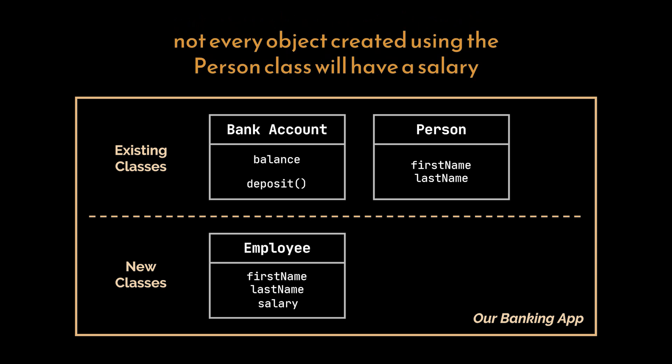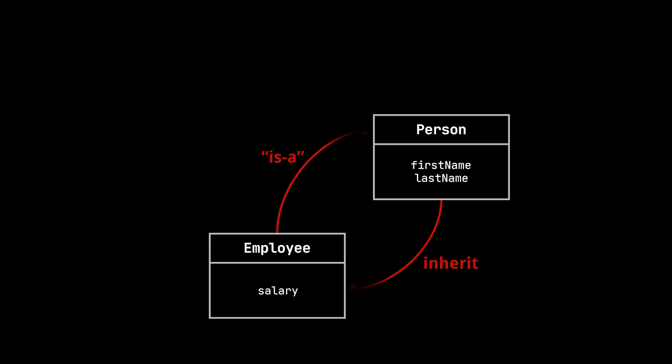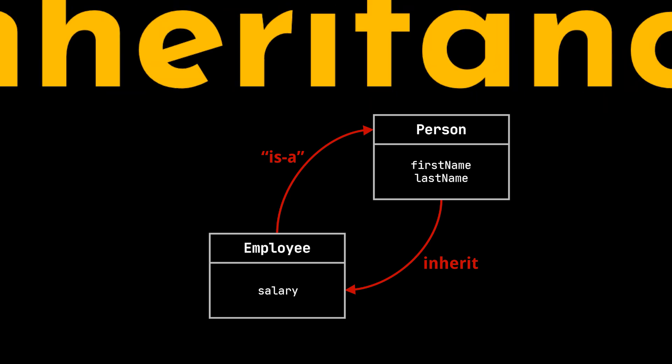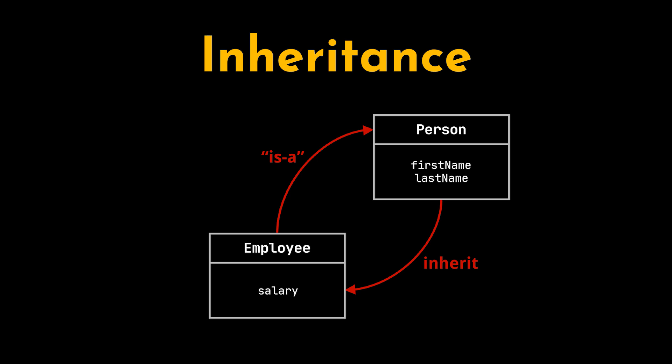Now, because we want to use abstraction and don't want to add the salary to the person class and use it—as not every object created using the person class will have a salary—what we are going to do is stick to creating the employee class, add to it the salary, and inherit the attributes of the person class, because an employee is a person. And this in OOP is referred to as inheritance.